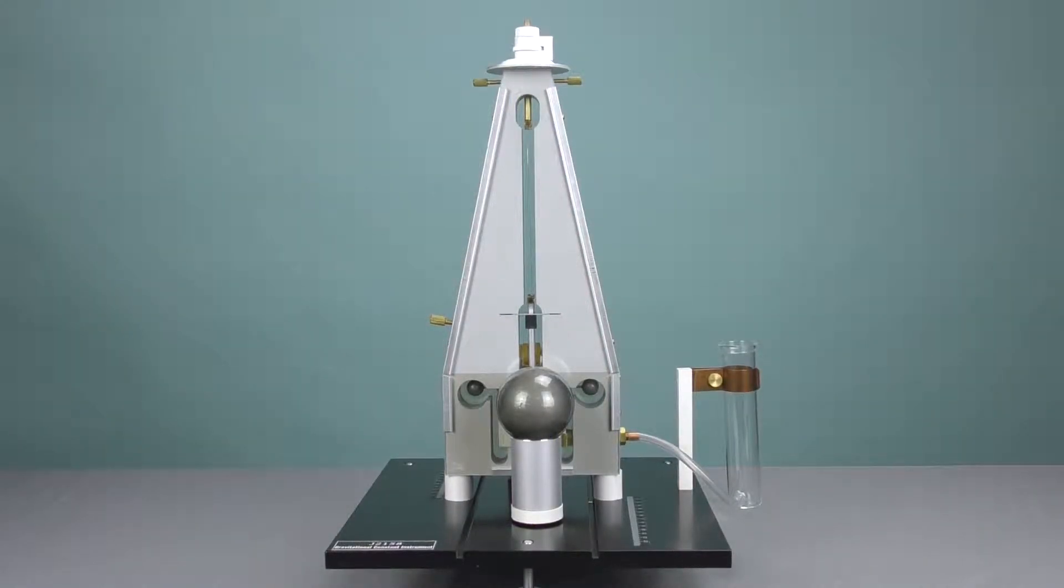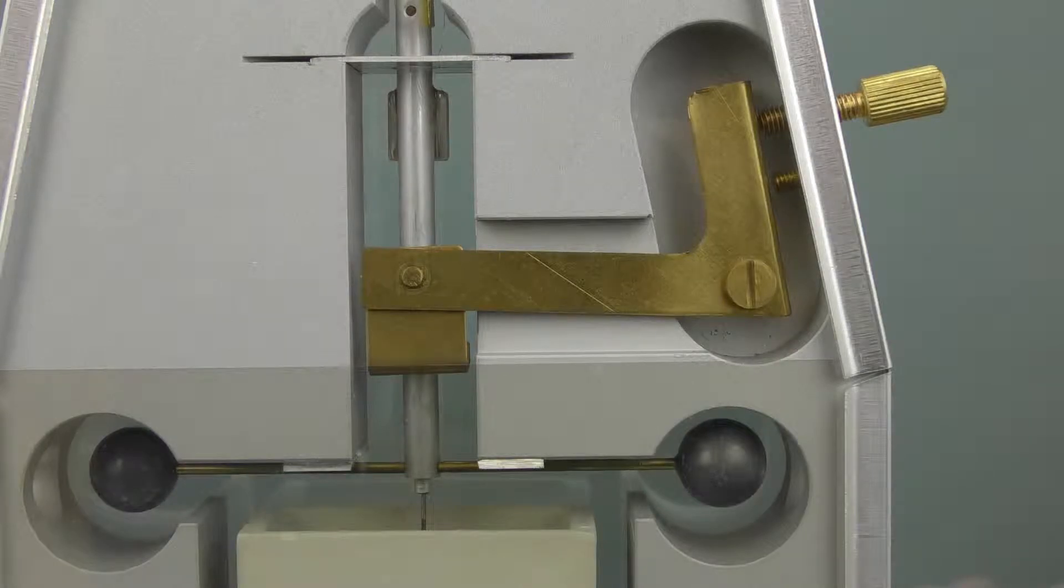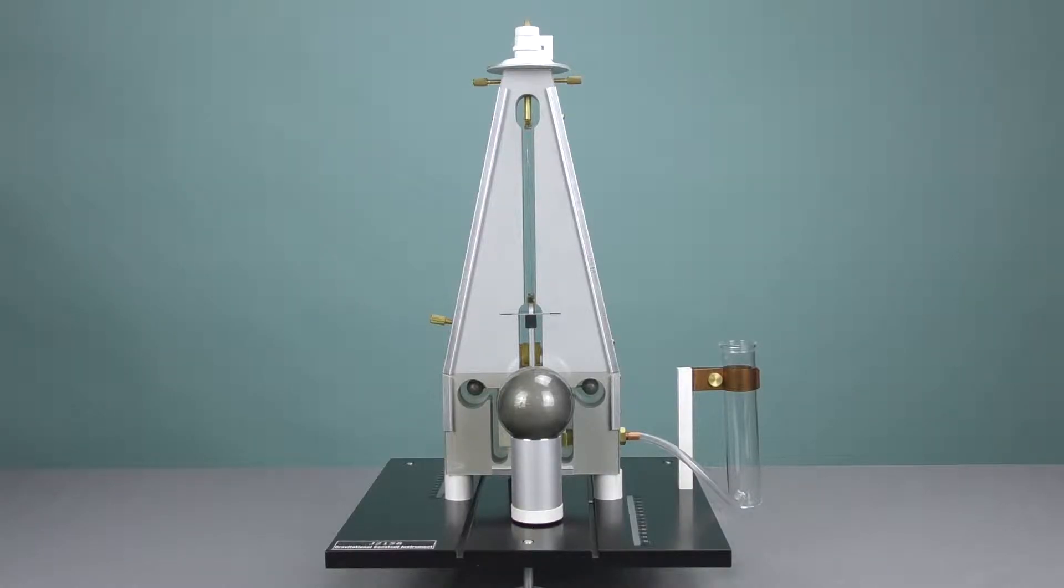For transportation purposes, the pendulum is immobilized. You would turn this knob very slowly to take the weight off of the bracket and place it onto the pendulum filament. You need to do this slowly. If you go too quick, you will break the filament.